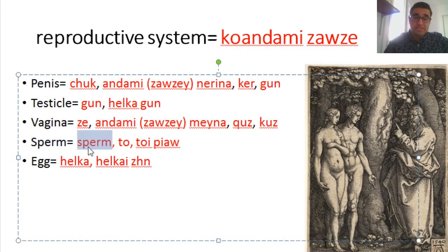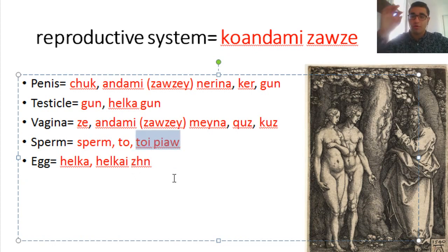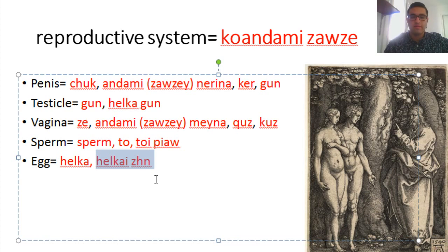Sperm — in Kurdish we say to, which translates as seed. Toipiao means male's seed, or male's sperm. Egg — you can say herke, which can mean egg just like in English. Herkezhin means the egg of a woman — the female reproductive cell used for reproduction.